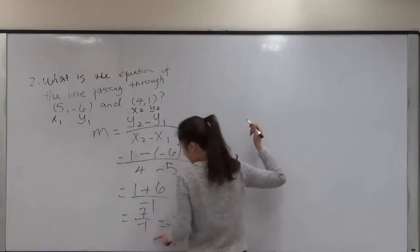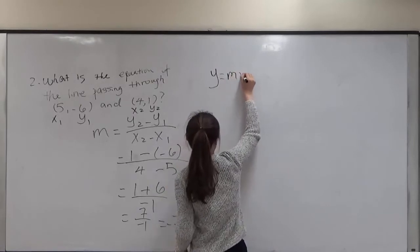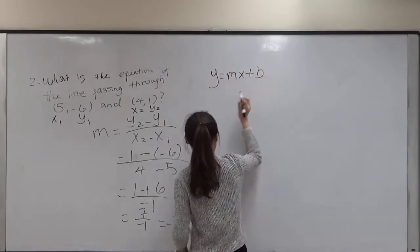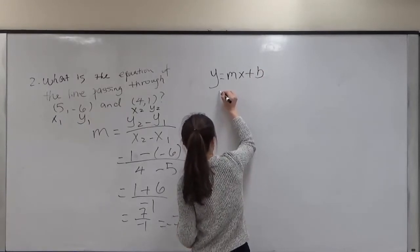Now we know our slope is equal to negative 7. I'm going to write the slope into the form mx plus b and substitute negative 7 into m.